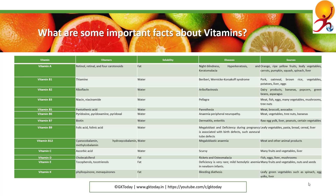Vitamin C, or ascorbic acid, is soluble in water. Deficiency can lead to scurvy. It can be found in fruits, vegetables, and liver.